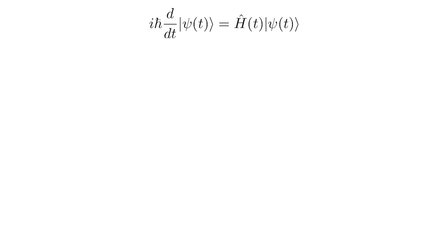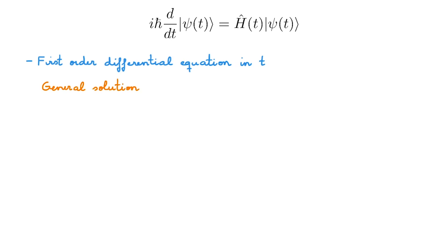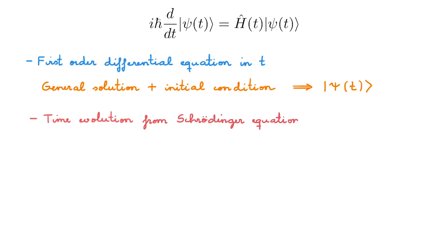What can we deduce about the time evolution of a quantum system from the Schrödinger equation? The key is that the equation is a first-order differential equation in time. This is key because all first-order differential equations can be solved unambiguously by finding first the general solution and then providing a boundary or initial condition. Once we have these, psi will tell us exactly what the state of the system is at any time t. It is critical that we understand what this means: the time evolution from the Schrödinger equation is completely deterministic. There is no ambiguity or probability involved.